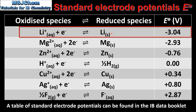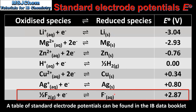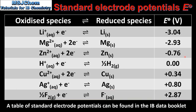In terms of strength as reducing agents, the lithium atom is the strongest, meaning it has the greatest tendency to undergo oxidation. The fluoride ion is the weakest reducing agent, meaning it has the lowest tendency to undergo oxidation. In terms of half cells in a voltaic cell: the half cell with the more negative standard electrode potential value will be the anode, and the half cell with the more positive standard electrode potential value will be the cathode. In the next video we will look at how to use these values to calculate the cell potential for a reaction.